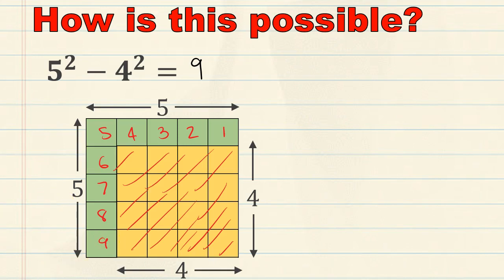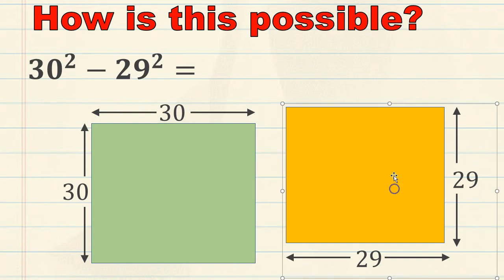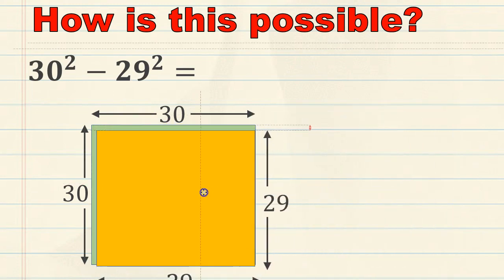Let's go back to the original question. We know we're going to get a solution of 59. 30 plus 29 equals 59. Let's look at this using the diagram. Once again, we're going to take the larger 30 by 30 square, and we're going to subtract the 29 by 29 square. What's going to happen when we do this?